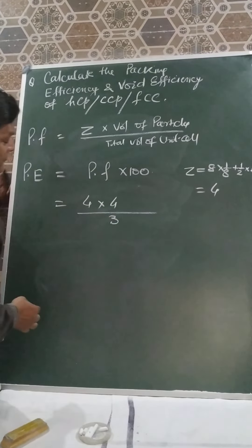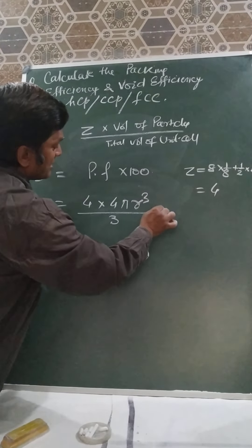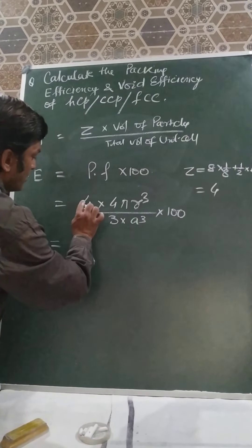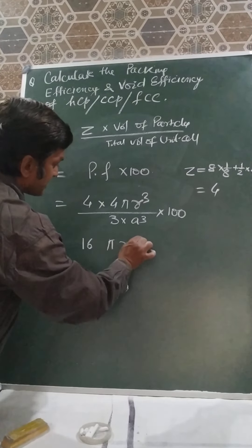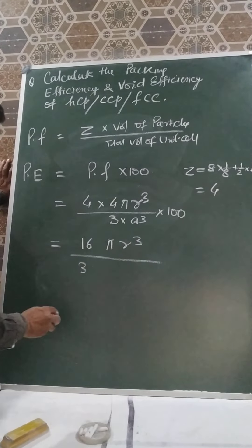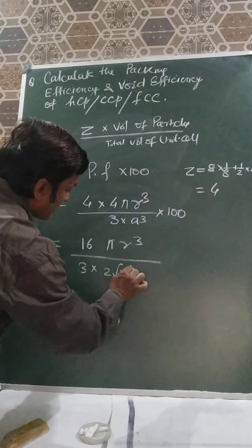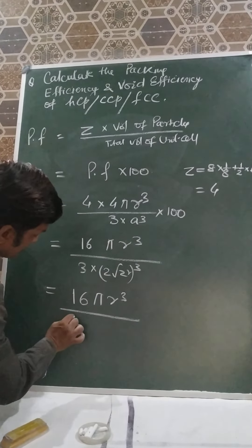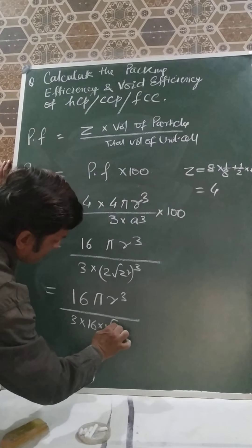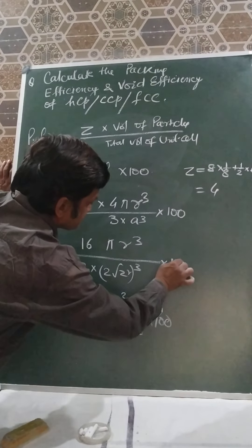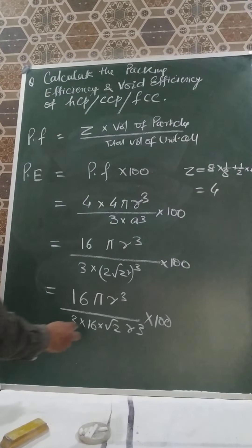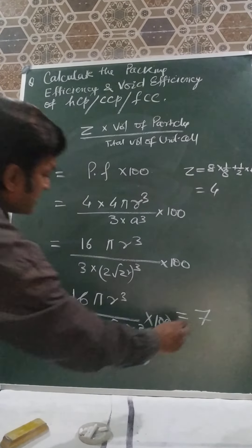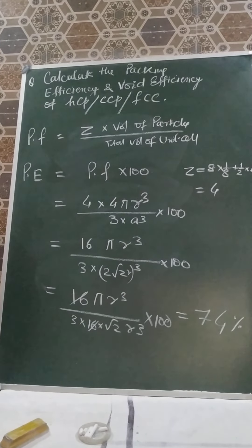Substituting into the formula: 4 into (4/3)πR³ divided by A³ into 100. A is equal to 2√2R, so A³ equals (2√2R)³. This gives 16πR³ divided by 3, over 16√2 R³, into 100. When we solve, the 16 cancels and we get packing efficiency equal to 74 percent.